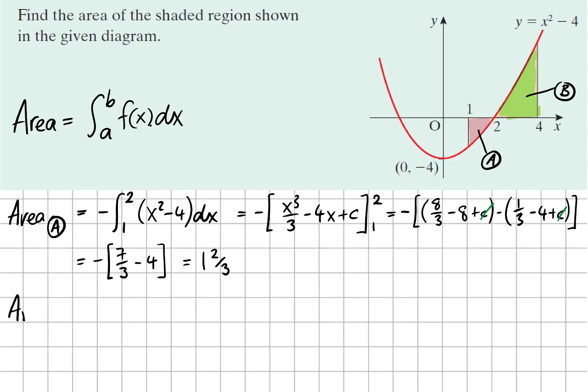Area B: the limits this time are between 2 and 4. It's the same function we're integrating, so again we get x³/3 - 4x + c. But this time we're substituting in the number 4 first and subtracting the answer when we substitute in 2. Again, the c values cancel out.